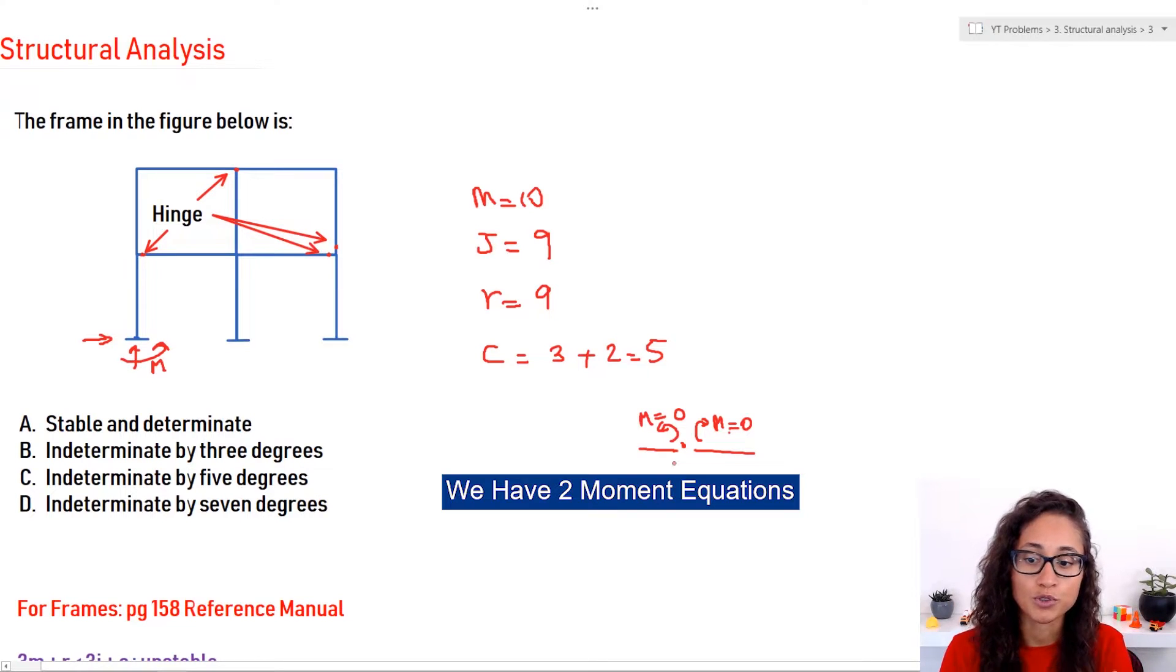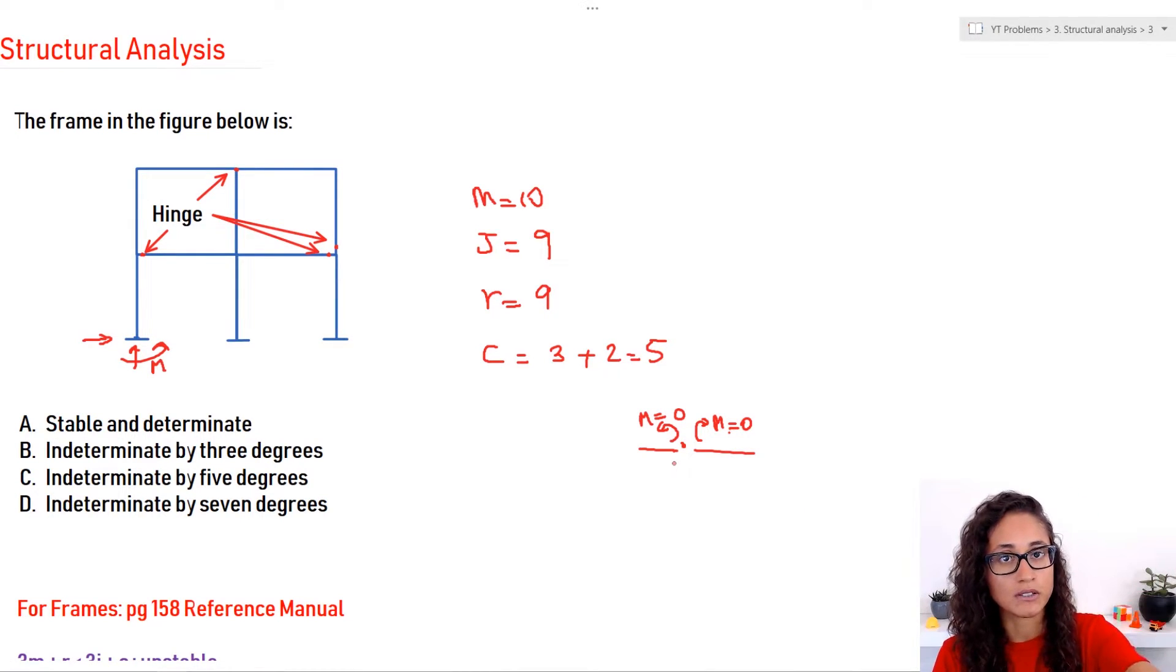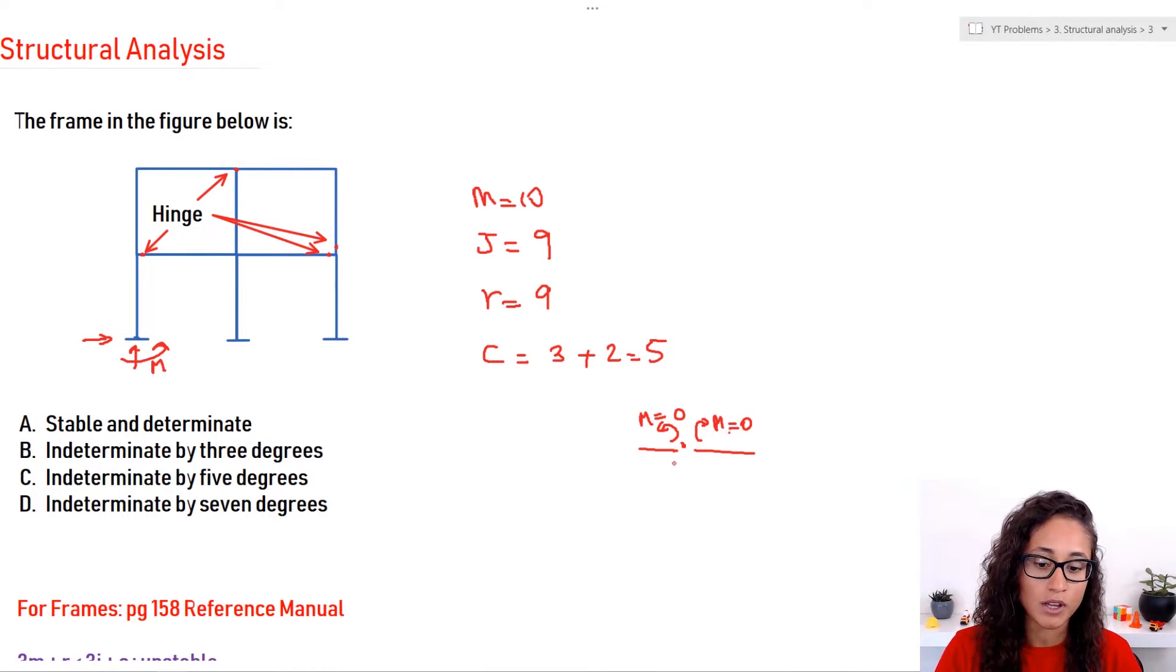Because remember, we're doing this because we want to know how many degrees this frame is indeterminate, so that way I can see how many equations I need to be able to solve for the reactions. It's just like how for the beam, we have three reactions, three unknowns, we can easily use statics to solve for it.